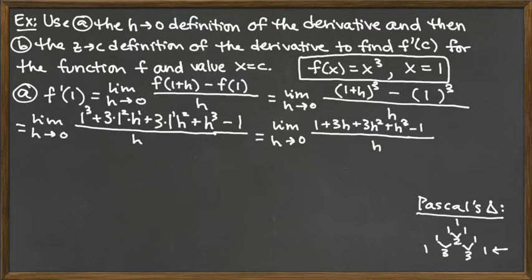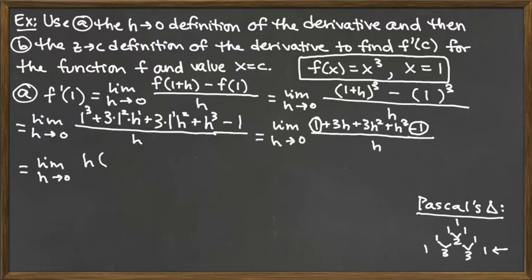What always happens if we're going to be able to take this limit is that all the constant terms are going to cancel. We've got a 1 and a minus 1, and those cancel. The other three terms in the top each have a common factor of h that can be pulled out. So we have the limit as h goes to 0 — pulling out the common factor of h from the top — leaving 3 plus 3h plus h squared.